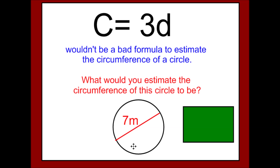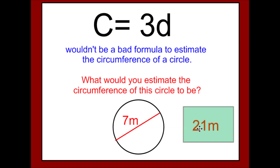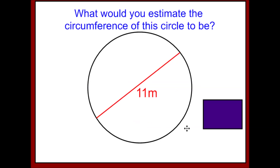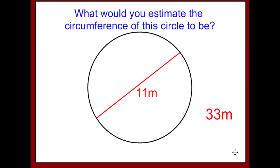Here we have a circle with a diameter of 7 meters. If you triple that, a good estimate for the circumference would be 21. How about this circle? The diameter is 11, so if we triple that and multiply by 3, a good estimate for the circumference would be 33 meters.